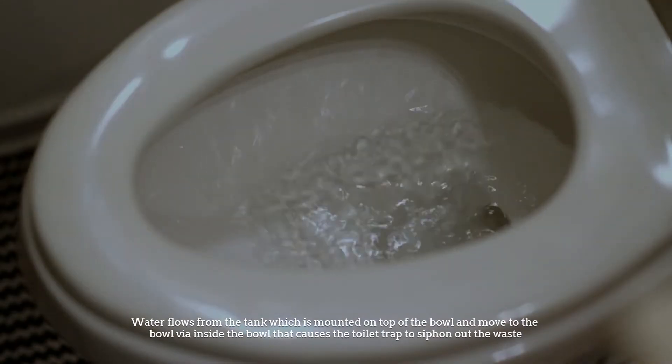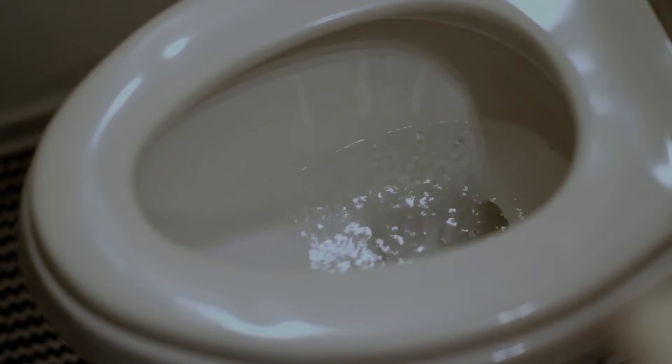Water flows from the tank which is mounted on top of the bowl and moves to the bowl via gravity, creating a force inside the bowl that causes the toilet trap to siphon out the waste.